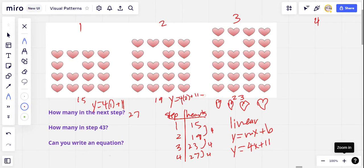Well, 4 times 2 would be 8 plus 11. Yeah, that equals 19. Let's try it with step number three. So y equals 4 times 3 plus 11. 4 times 3 would be 12 plus 11 would be 23. Yes, that works for step three. So I think that's our equation. y equals 4x plus 11.